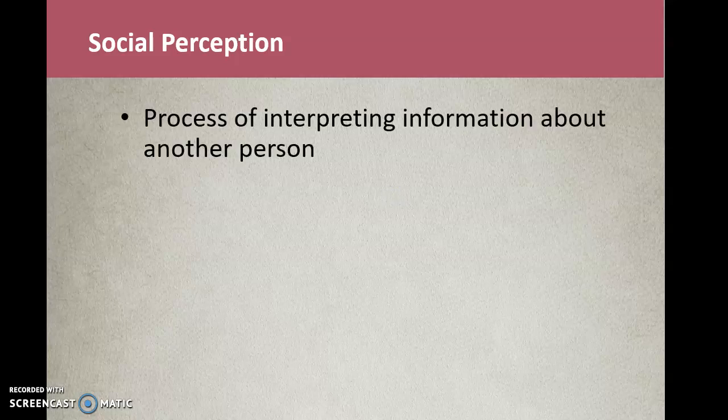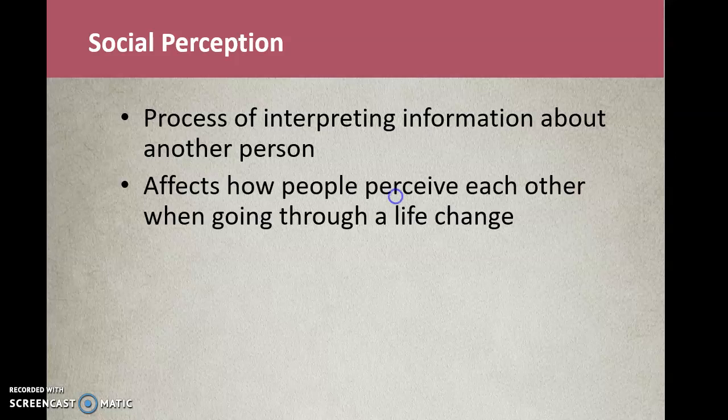Social perception is the process of interpreting information about another person. It affects how people perceive each other, especially when they're going through a life change. For example, a pregnancy — do we think that person is going to cost time off, be sick a lot, or be out with the baby? So it affects how we perceive a female in the workplace. It can also be culturally determined — we perceive things in a certain way because of our cultural backgrounds and how we were raised.